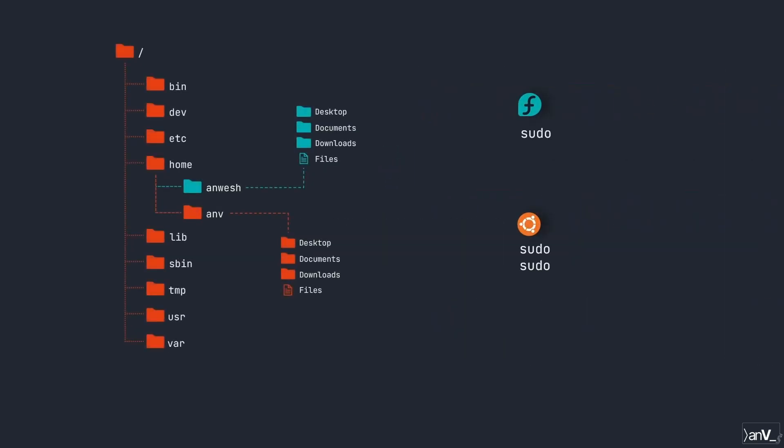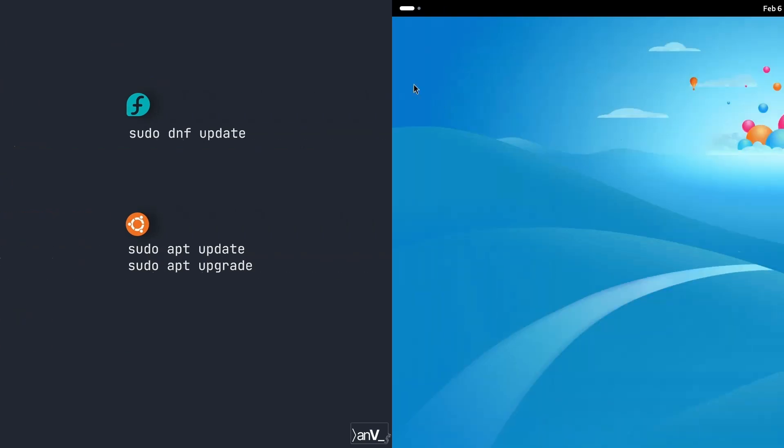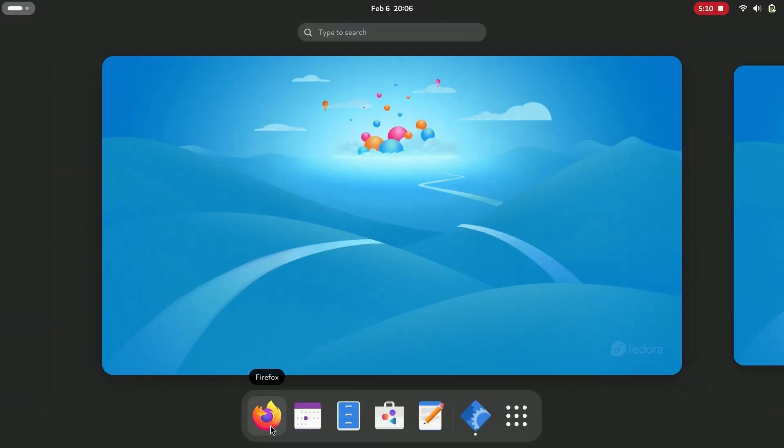The first thing we can do after installing a Linux OS is updating the packages. This can be done using the package management system of the installed Linux OS. Fedora has DNF as its package management system whereas Ubuntu has APT. Since the process of updating relates to the whole system and not a specific user, we have to use sudo.